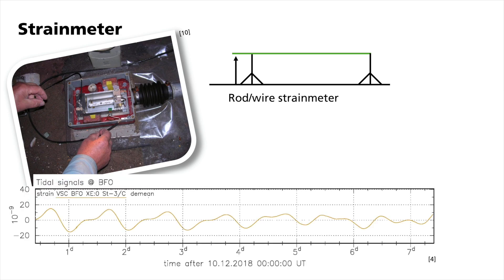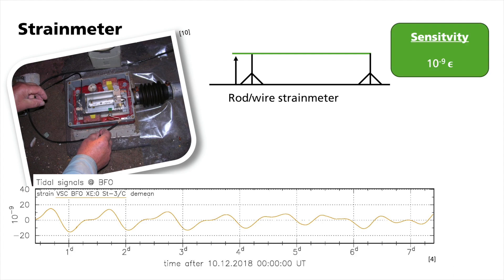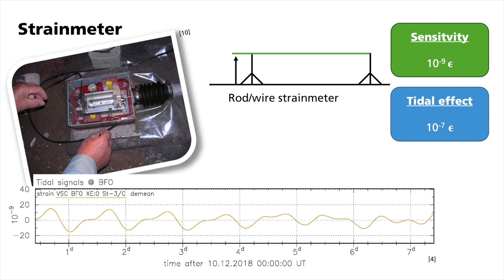Laser strain meters, however, measure the change in distance between two points using a laser beam over up to one kilometer. At the end of the system, the beam is reflected back to its origin and interferometry is used to measure the distance change. Sensitivities are at the order of 10 to the power of minus 9, while the relative change in strain due to the earth's tides at mid-latitudes is around 10 to the power of minus 7.